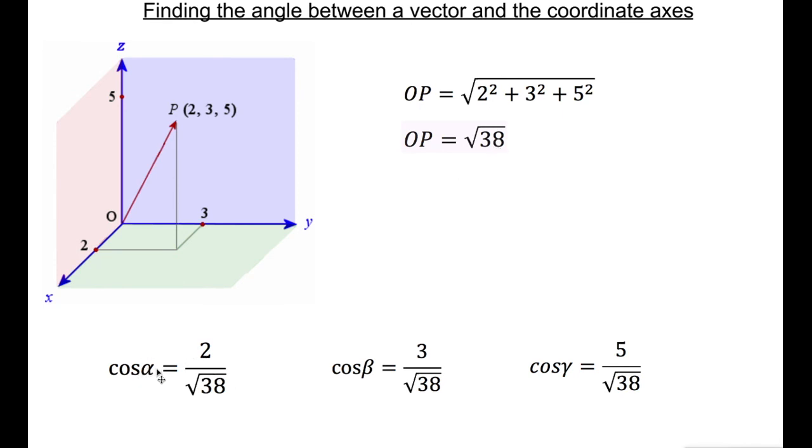And then for the angle between the vector and the x-axis, that's alpha, cos alpha equals 2 over root 38. And then cos beta equals 3 over root 38 for the y-axis, and cos gamma equals 5 over root 38 for the z-axis. I'm hoping that made sense to all of you.